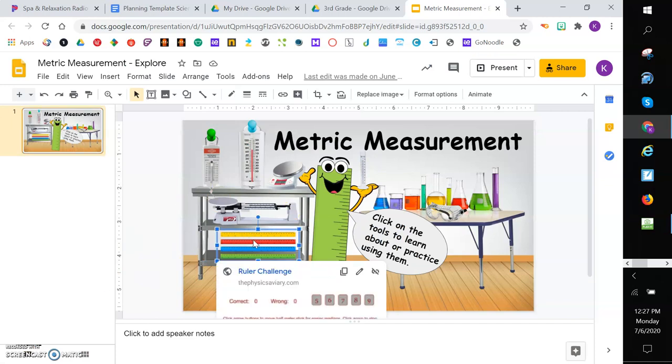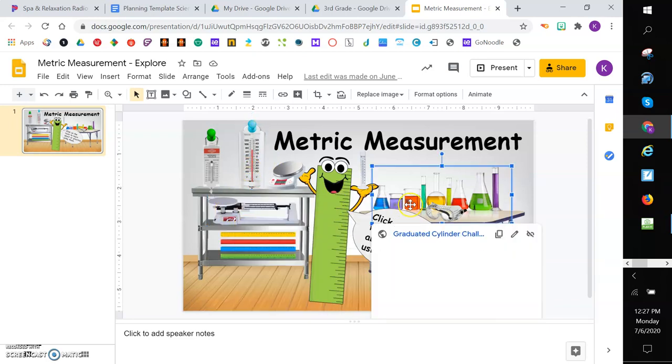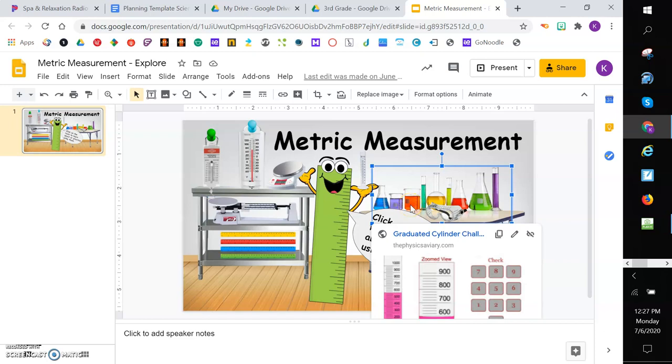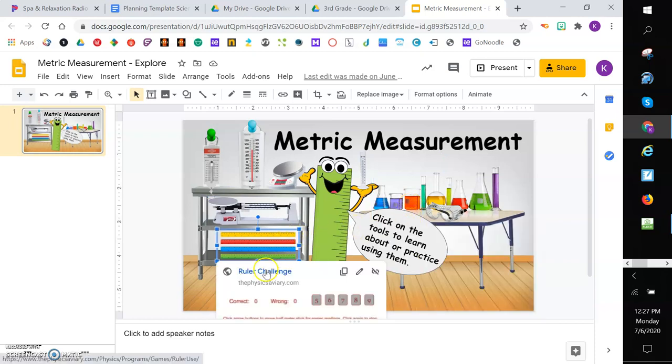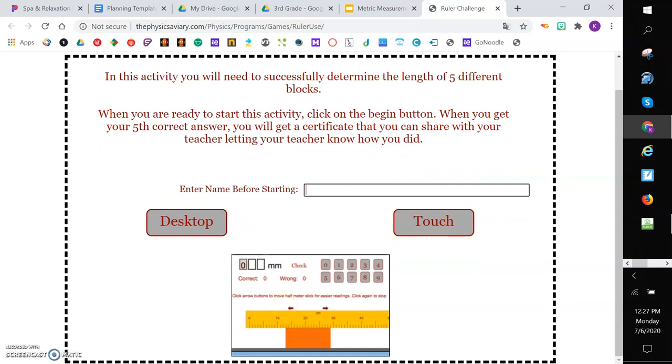So there's different tools here, like rulers, and thermometers, and scales. Okay? And so, and our graduated cylinders that we talked about in our book. So you're going to click on a tool. And then when you click on that tool, it will take you to a challenge. You just put in your first name. And then once you do, let me show you.